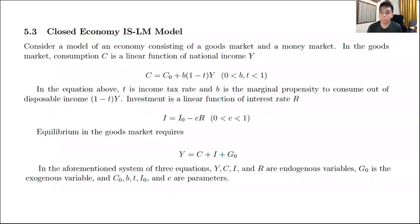Hi everyone and welcome to this video on applications of matrix algebra to economics. In this particular video we're going to discuss a closed economy ISLM model. So IS is the goods market and LM is the money market. This simple Keynesian model was developed so we could see the association between these two markets and calculate the overall national income Y and the level of interest rate R.